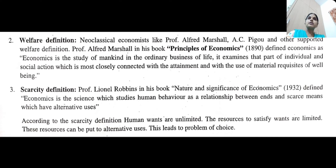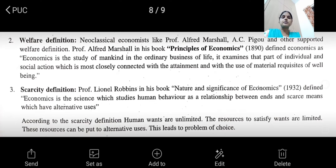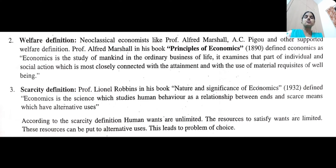We all know that when one want is satisfied, another want arises — human wants are unlimited. There is shortage or scarcity of resources in the economy. These resources can be put to alternative uses — they are not only scarce but we can also use them for different purposes. They have alternative uses, they have multiple uses, and we can use them for different purposes.